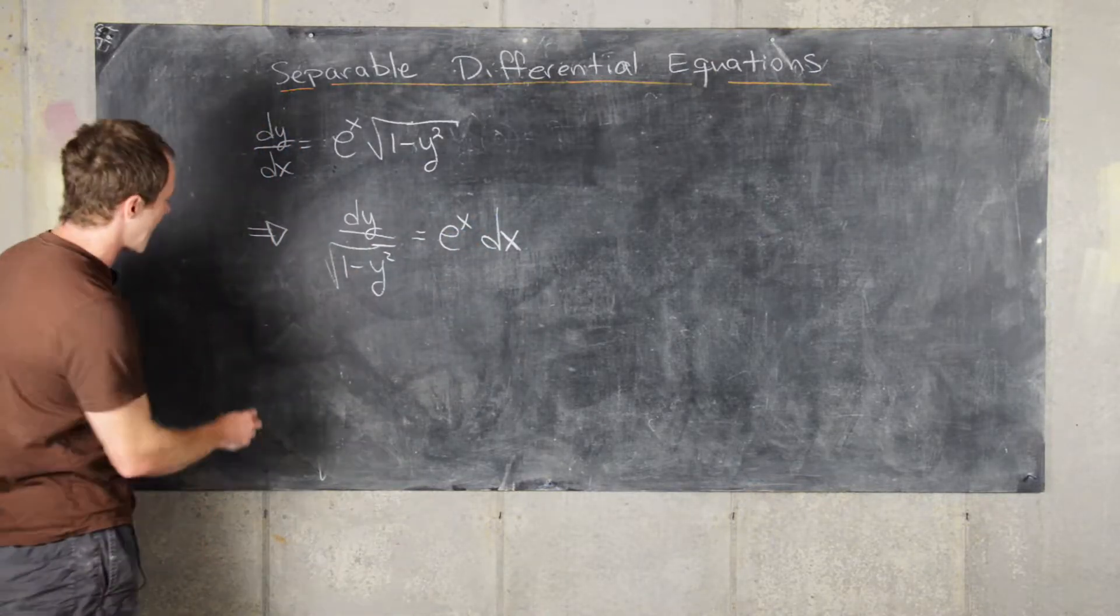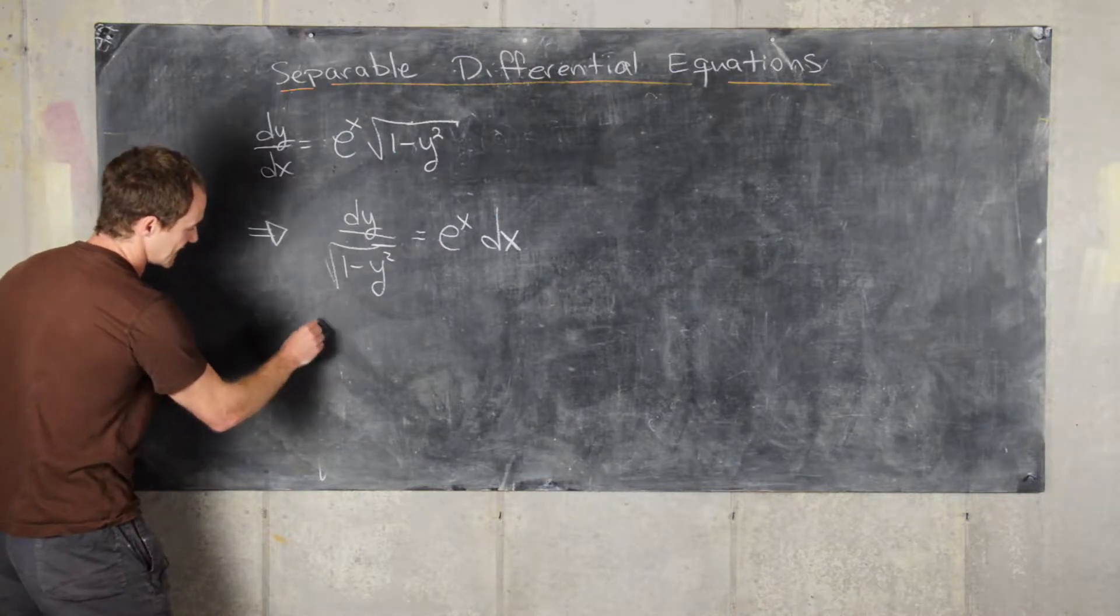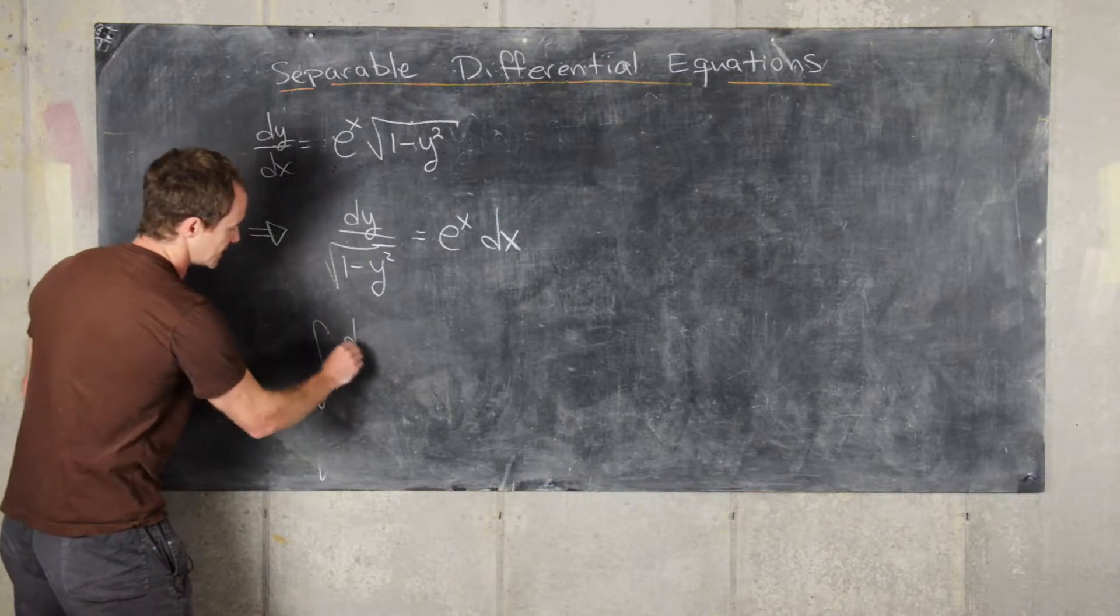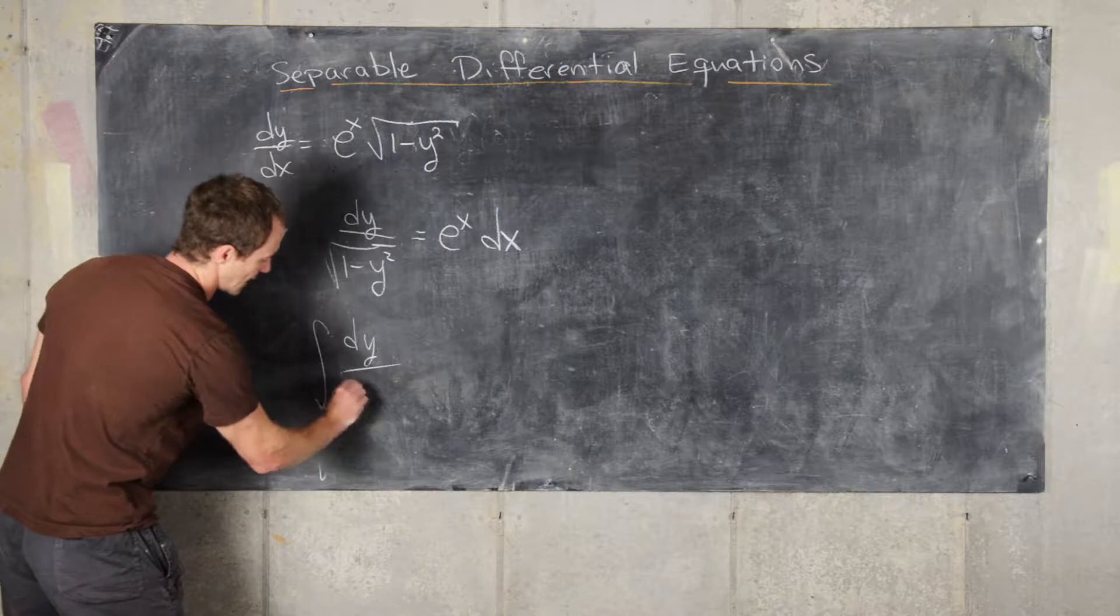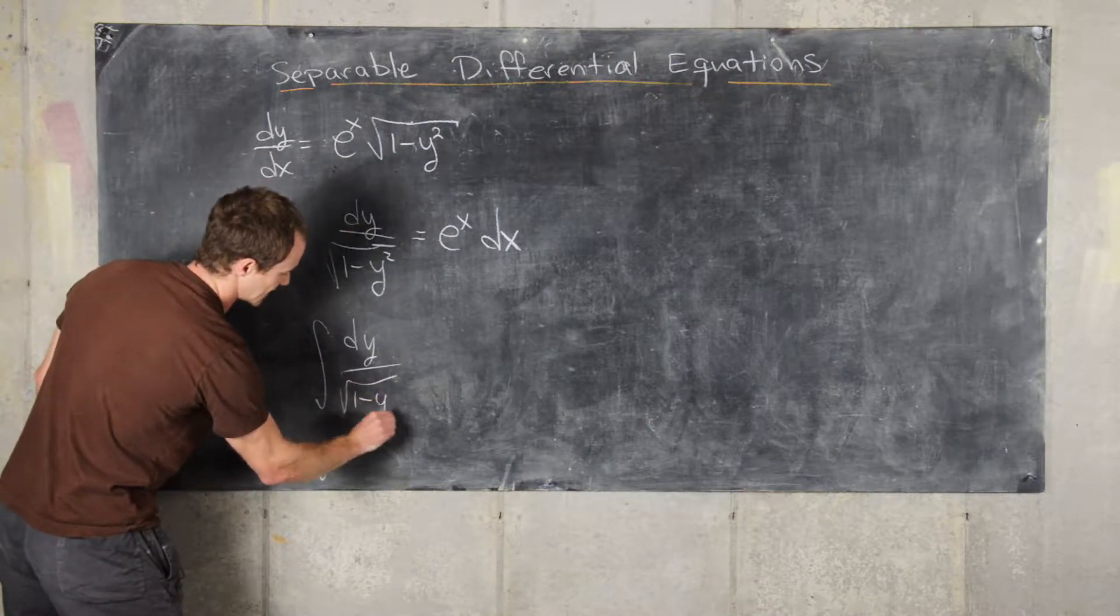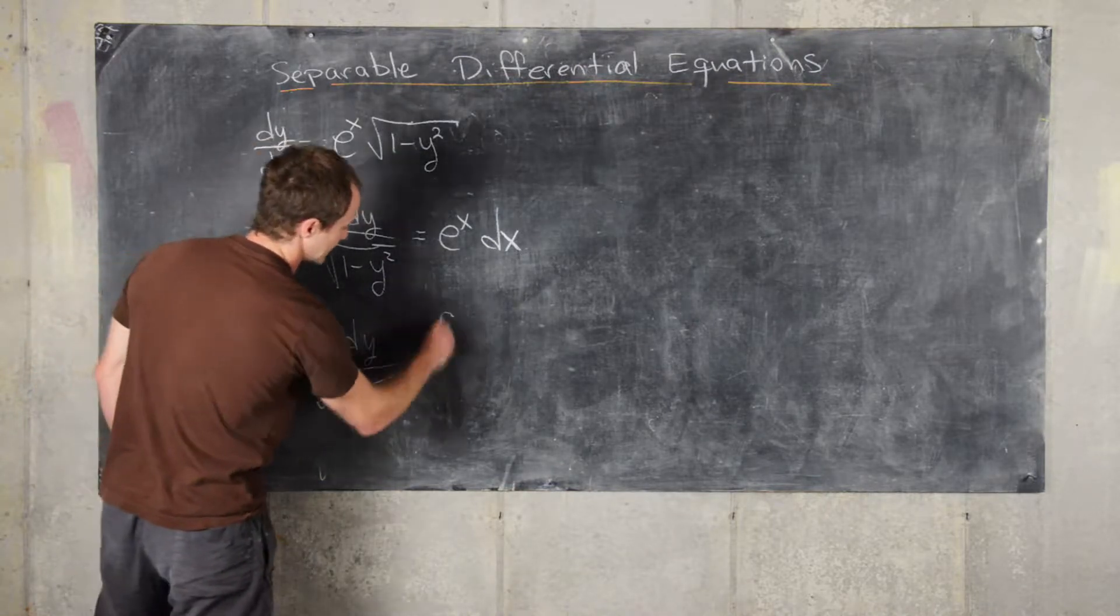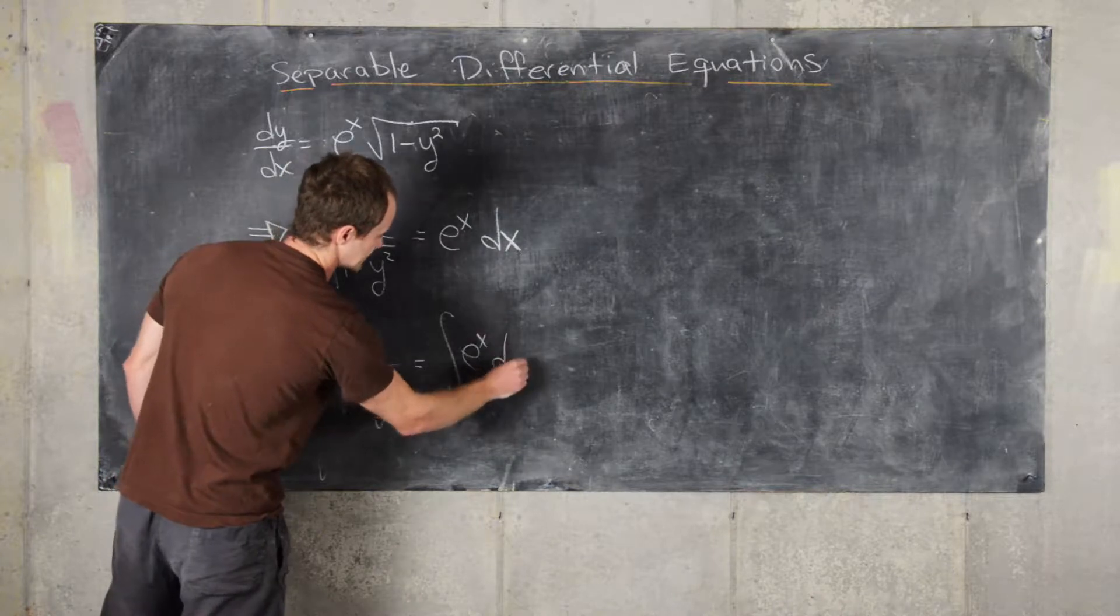Okay, good. Now the next thing that we can do is take the antiderivative of both sides, so we get the antiderivative of dy over the square root of 1 minus y squared equals the antiderivative of e to the x dx.